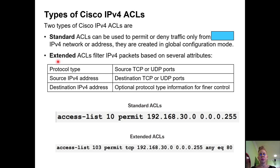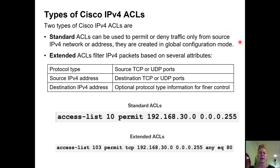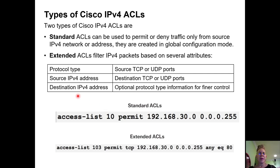Now let's talk about the different types of IPv4 and IPv6 access control lists. There are two types: standard access control list and extended access control list. A standard ACL is more basic, while an extended ACL lets us do more fine tuning. The limitation of a standard ACL is that you can only permit or deny traffic based on the source IPv4 network or address. With an extended access control list, I can filter packets based on protocol type on source or destination, using TCP or UDP ports, application traffic like HTTP or HTTPS, source IPv4 address, destination IPv4 address, or the full network.